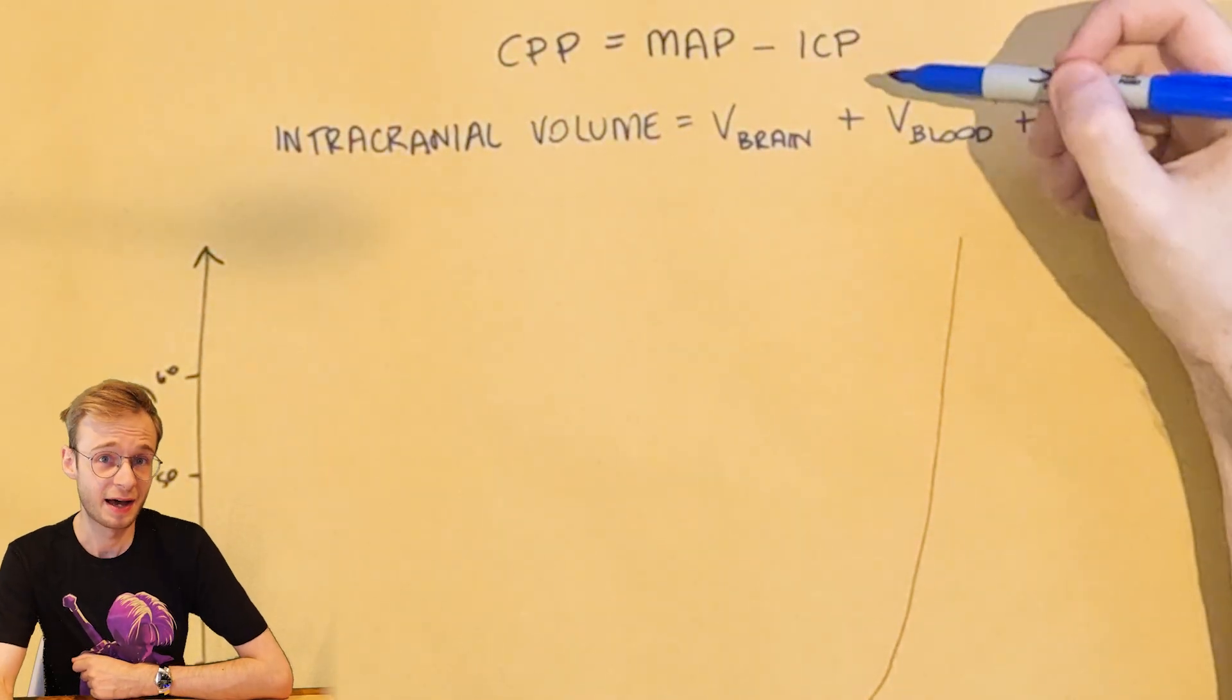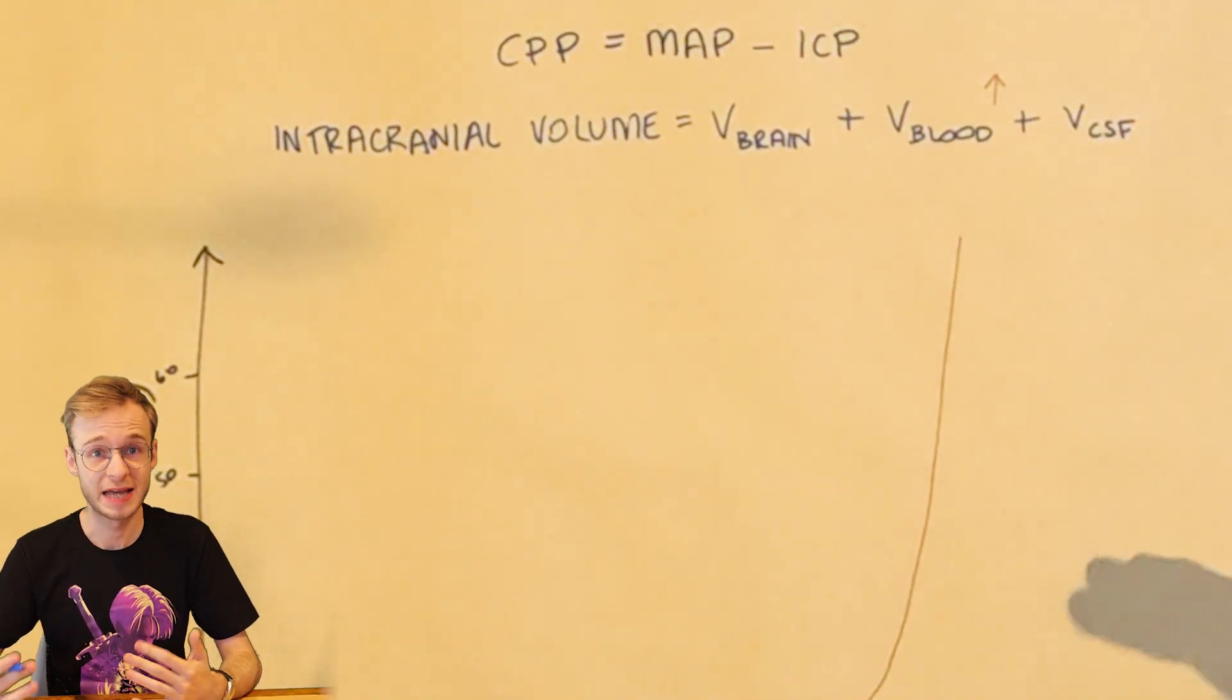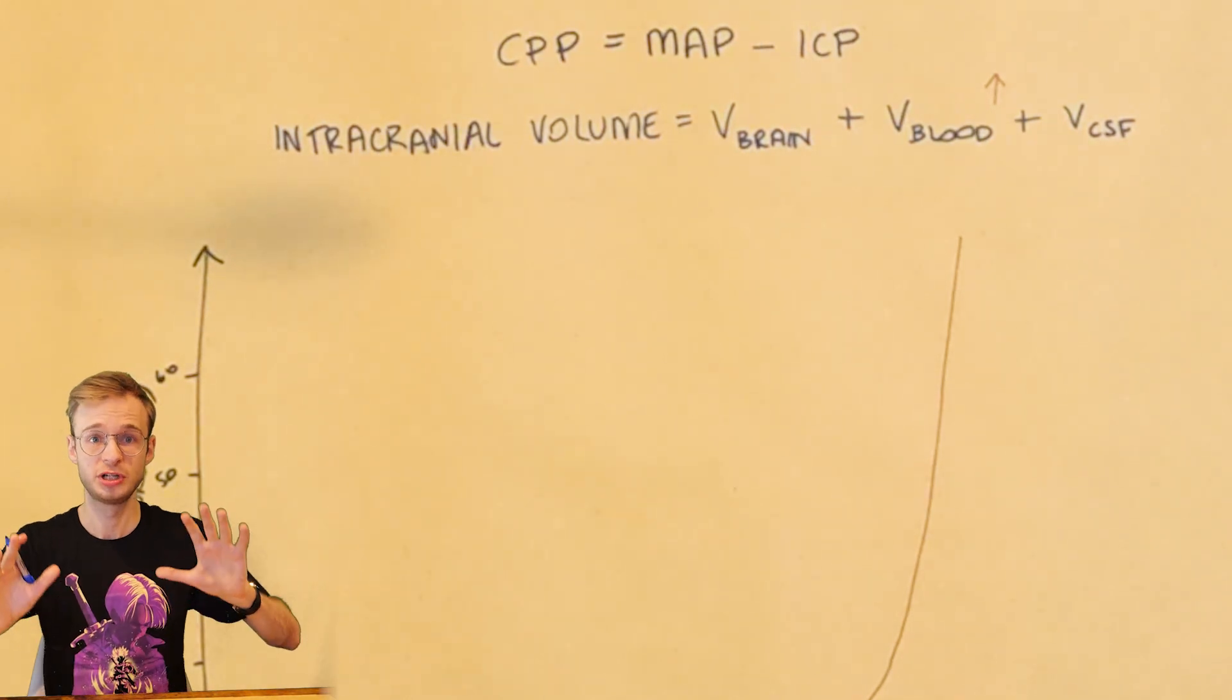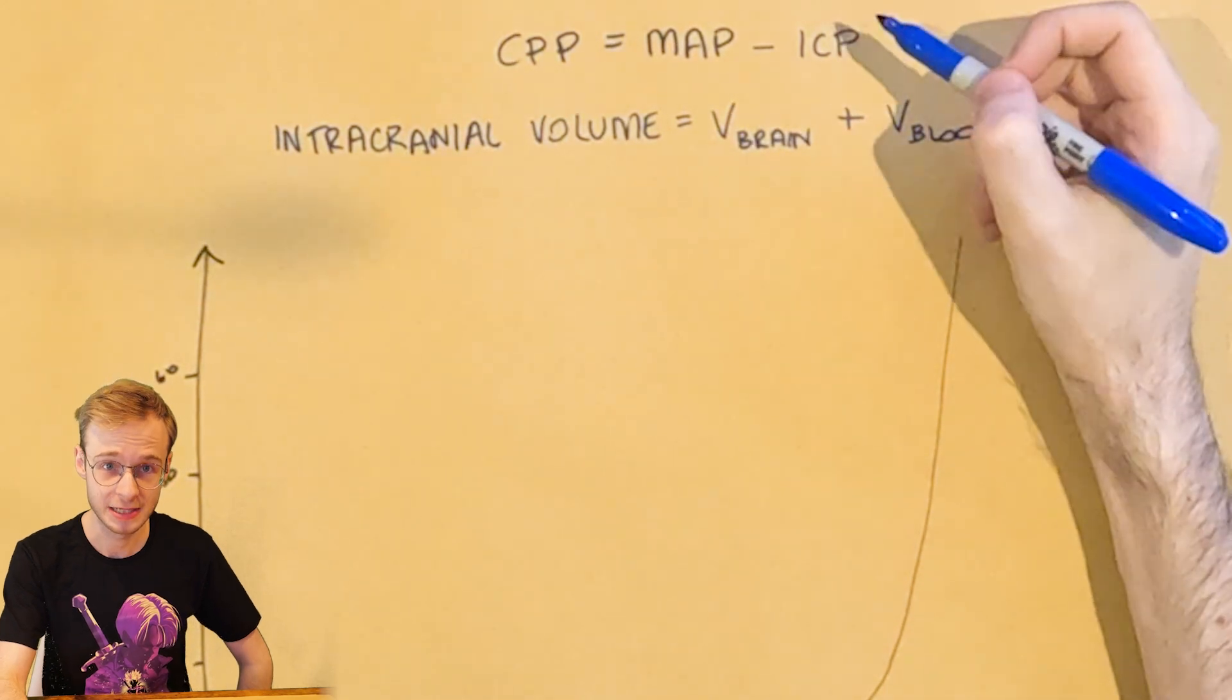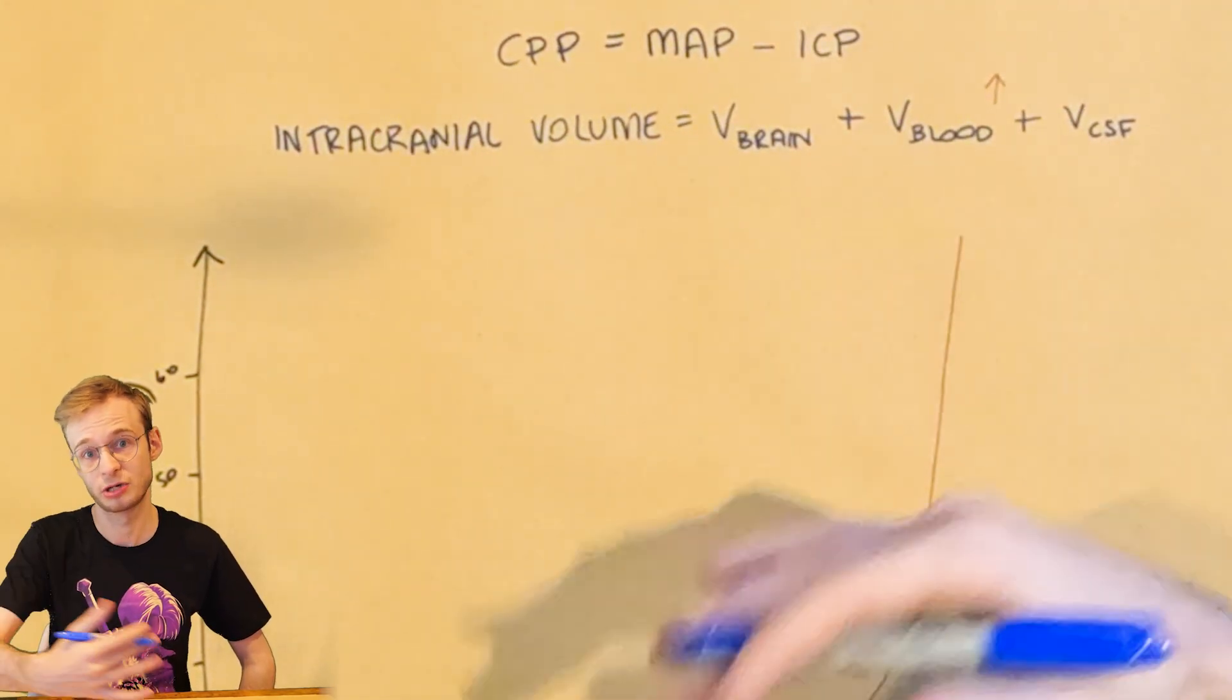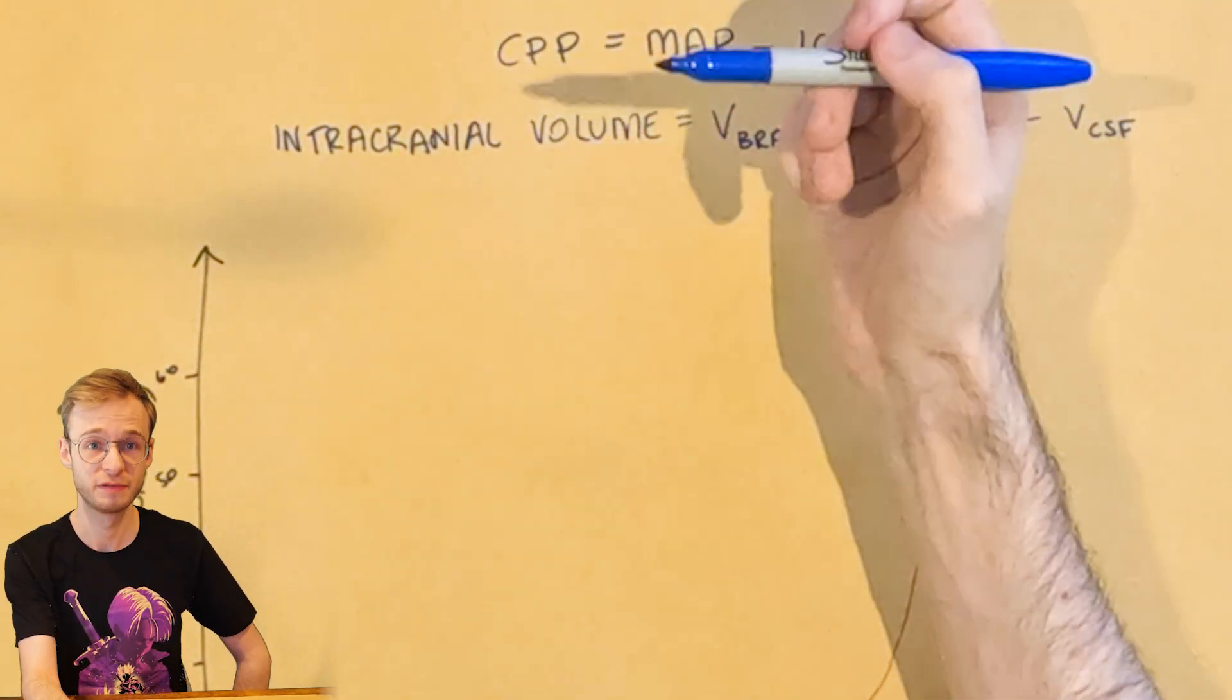What this means is that the higher the intracranial pressure becomes, the harder it is for blood to enter the skull and perfuse the brain, because the body is trying to push harder and harder against an increasing pressure inside the brain. So as ICP rises, assuming there is no MAP or mean arterial pressure compensation, then cerebral perfusion pressure must fall.